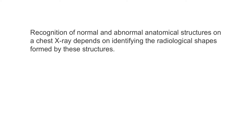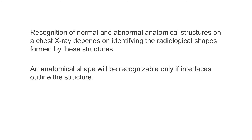In summary, recognition of normal and abnormal anatomical structures on a chest X-ray depends on identifying the radiological shapes formed by these structures. An anatomical shape will be recognizable only if interfaces outline the structure. An interface will only occur if there is enough density difference between structures that are adjacent to each other. In the example of the aortic arch, we could not identify the medial border because the medial border of the aorta has the same radio density as other mediastinal structures.